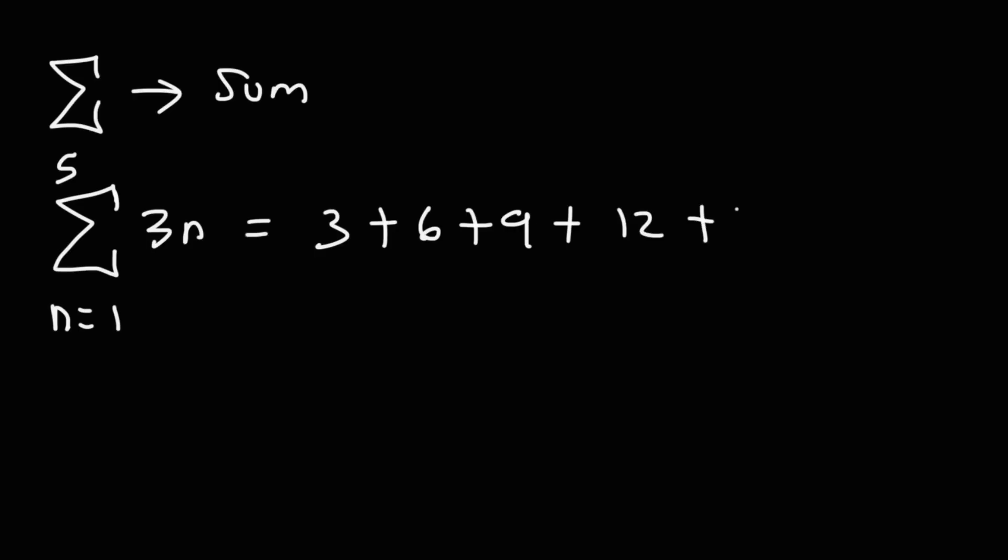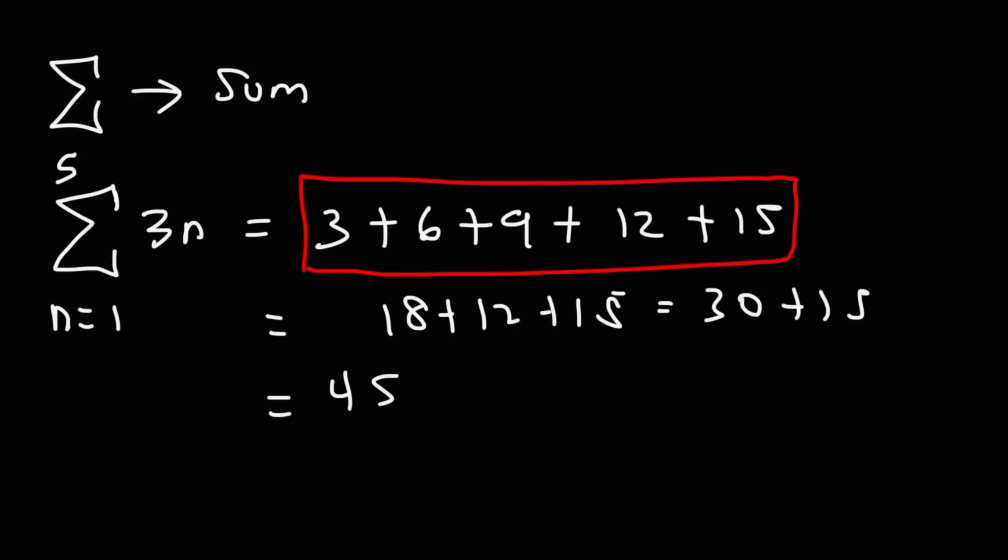So you start here. You stop at the 5th term. And the sigma sign means summation. Meaning you add up all the terms. So this answer will be the sum of those 5 numbers. So that's 9 plus 9, which is 18, plus 12. 18 plus 12 is 30, plus 15 is 45. So the value of this expression is 45. So anytime you see sigma, it means sum or summation.